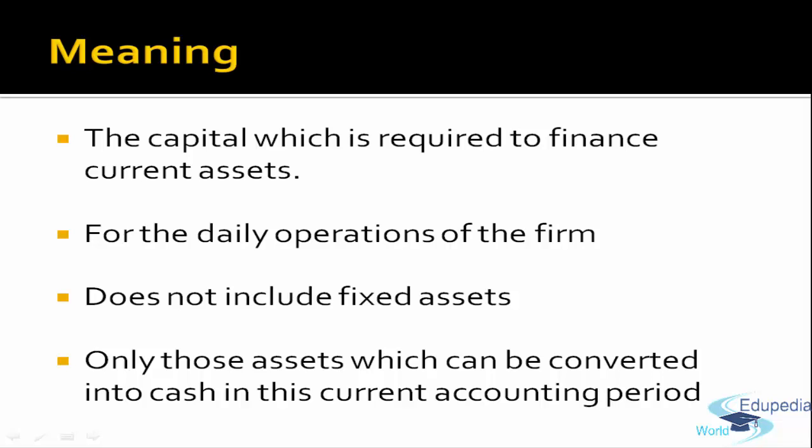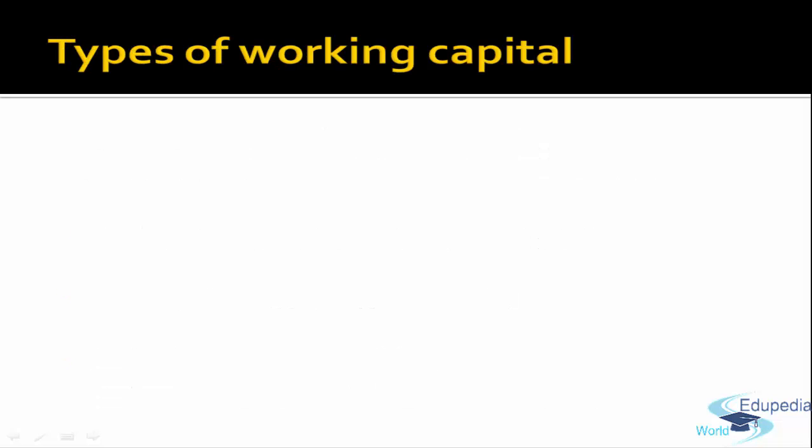Current assets does not include the fixed assets of the company. By current assets we mean those assets which can be converted into cash in the current accounting period, or you can say in the current operating cycle — we'll discuss operating cycle later. So working capital can be defined as all the short-term assets which are used in daily operations of a company.